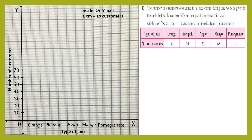Let's start drawing the rectangles. For orange, we have 50 customers, so five centimeters. We draw the first vertical line, then the second vertical line, and both vertical lines are joined by a horizontal line. You can see an arrow pointing towards 50, which means orange juice is taken by 50 customers.